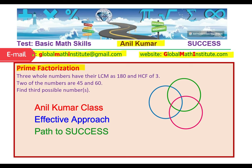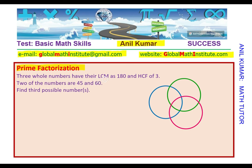The question here is, three whole numbers have their LCM as 180 and HCF of 3. So lowest common multiple of three numbers is 180 and the highest common factor is 3. Two of the numbers are 45 and 60. Find the third possible number.